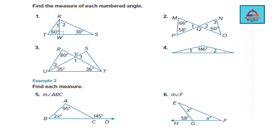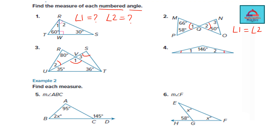In today's video we are solving problems 1 to 6. For each problem we need to find the numbered angles. In question 1, find angle 1 and angle 2. In question 2, find angle 1 and angle 2 — note these are vertically opposite angles so they are equal. In question 3, find angles 1, 2, and 3. In question 4, find angle 1 and angle 2, which are equal. In question 5 find angle x, and in question 6 find angle x.